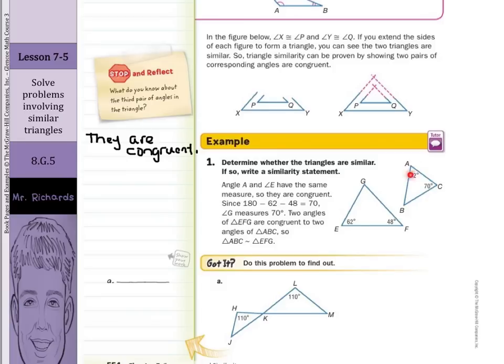As it says here, angles A and E have the same measure, so these two angles are congruent. Since 180 minus 62 minus 48 equals 70, angle G measures 70 degrees. Two angles of EFG are congruent to two angles of ABC, so triangle ABC is similar to EFG.